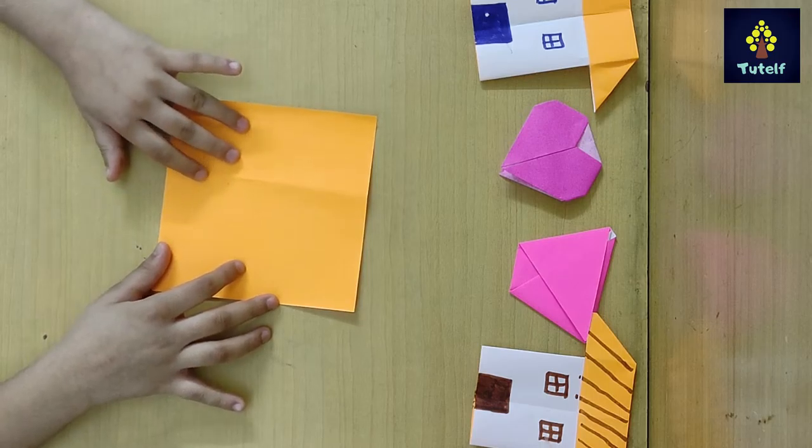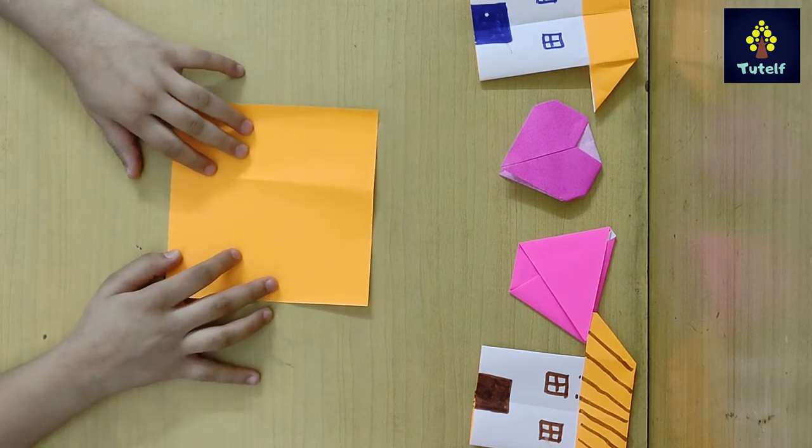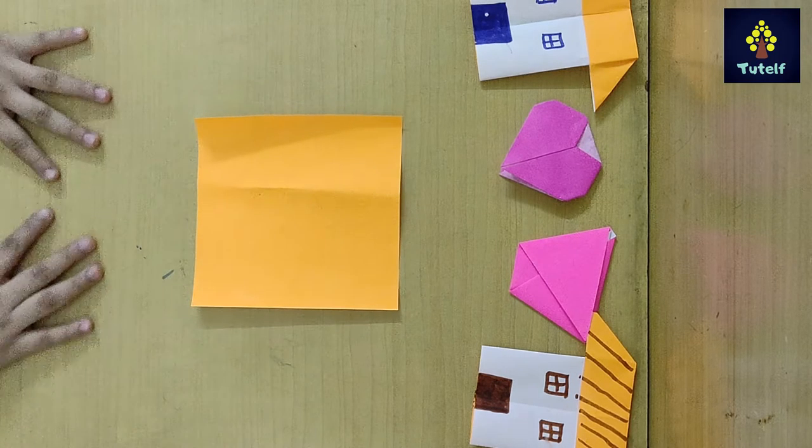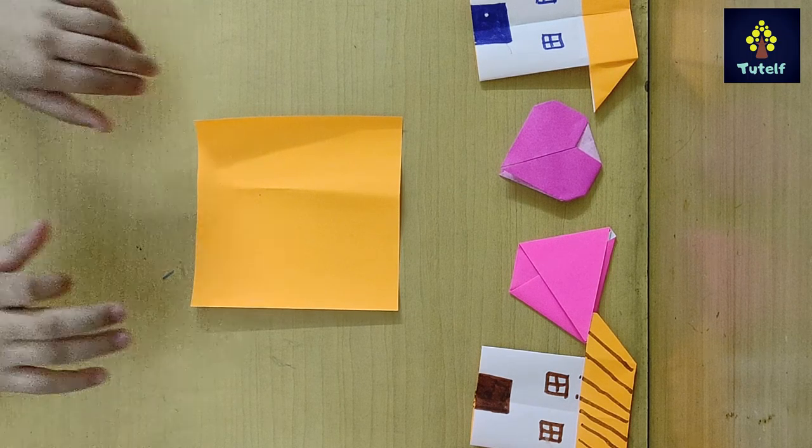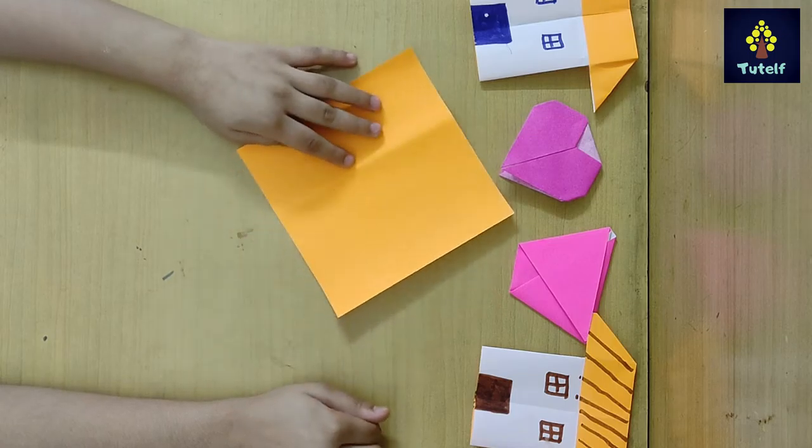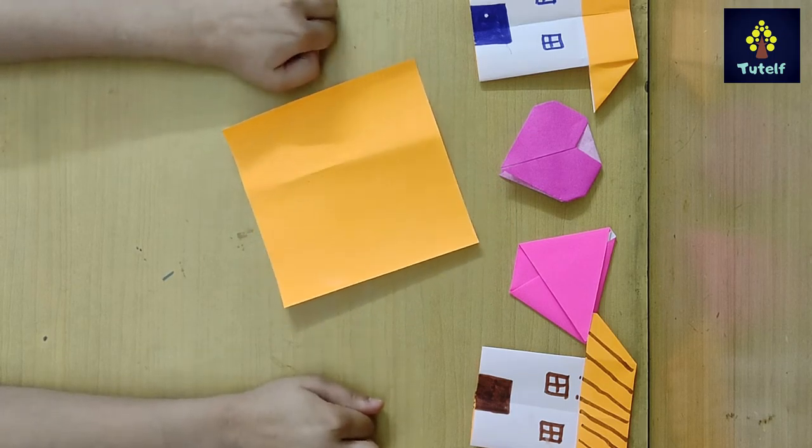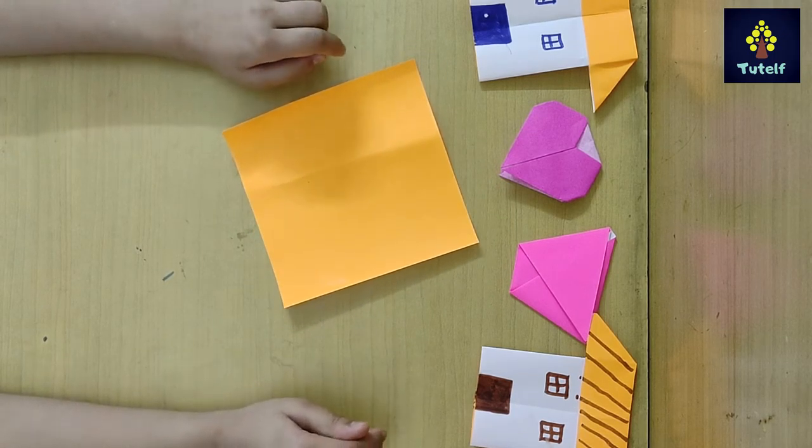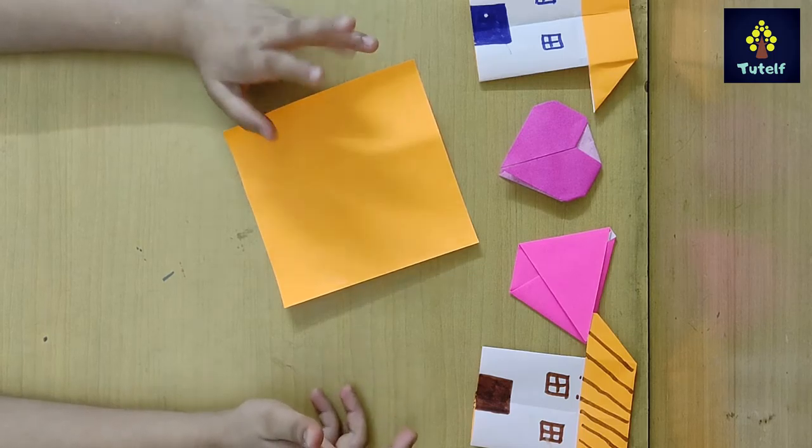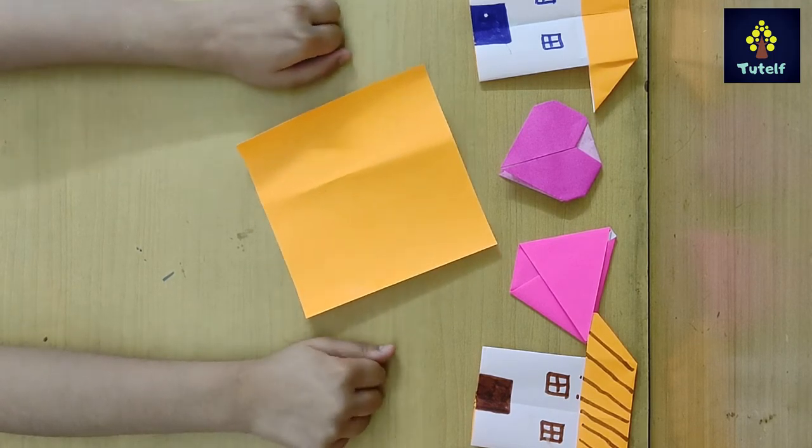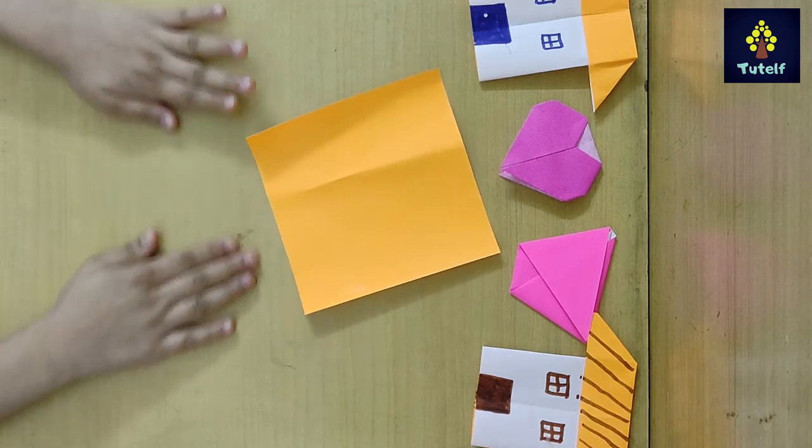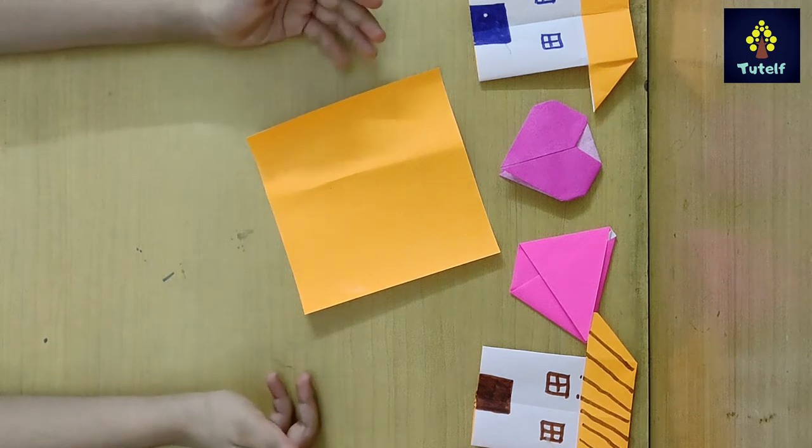Let's start the video. First tip: when you make origami, the table where you want to make origami should be hard and flat. This is my table.